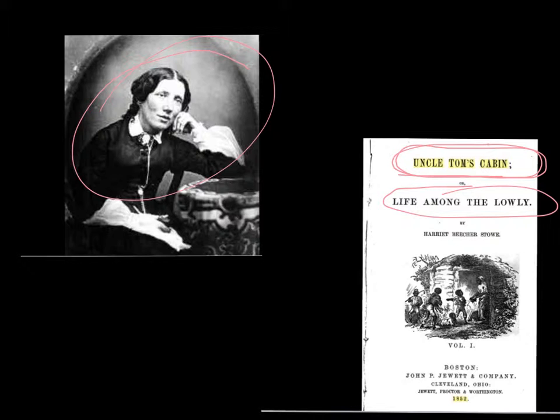Southerners were angered by the book. They said it was not a real story — it was fiction. And it was, but it was realistic. They felt attacked because Stowe never owned slaves and never lived in the South. Through her characters, she explained slavery's cruelty and injustice to the whole nation and the world. Uncle Tom's Cabin made a lot of people abolitionists, but made the South angry.